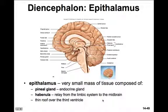Finally, let's look at the epithalamus. The epithalamus is a very small mass of tissue composed primarily of the pineal gland, which is an endocrine gland. The habenula is also part of the epithalamus — it's a relay from the limbic system to the midbrain. There's also a thin roof over the third ventricle, which is also part of the epithalamus.